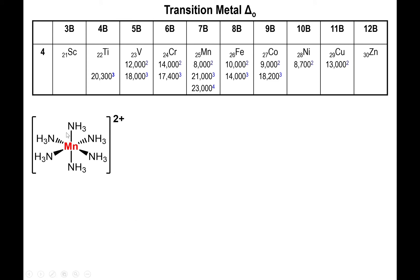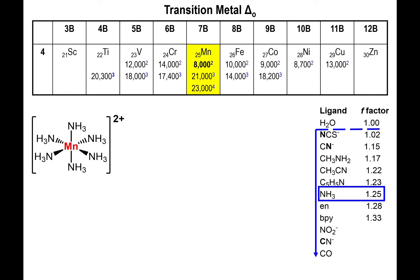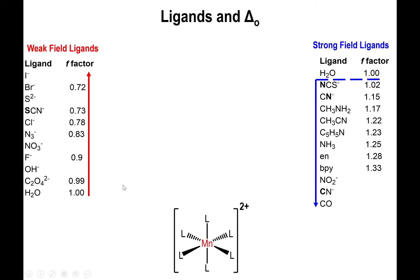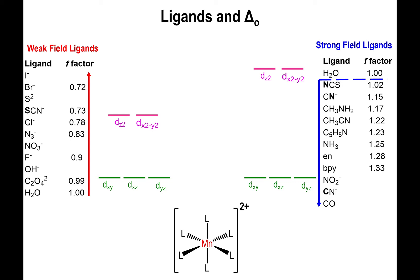For example, if we have manganese with six amine ligands and the complex is 2+, manganese 2+ has a delta octahedral value of 8,000 inverse centimeters for the hexa aqua complex. Since amine has an f factor of 1.25, we multiply 1.25 by 8,000 to get 10,000 inverse centimeters — that's the delta octahedral value for the hexa-amine manganese 2+ complex.